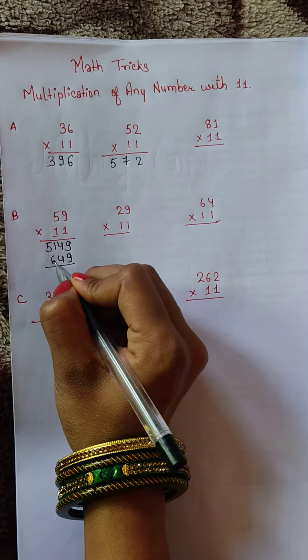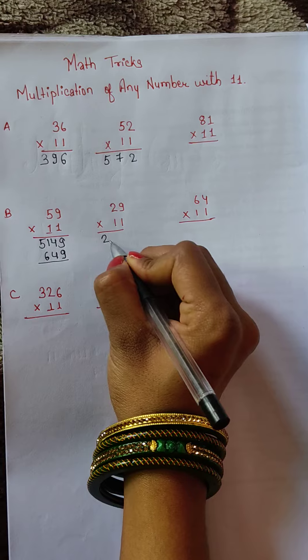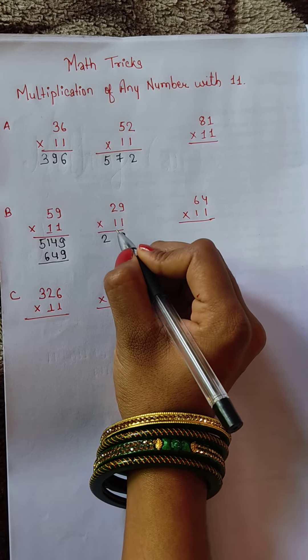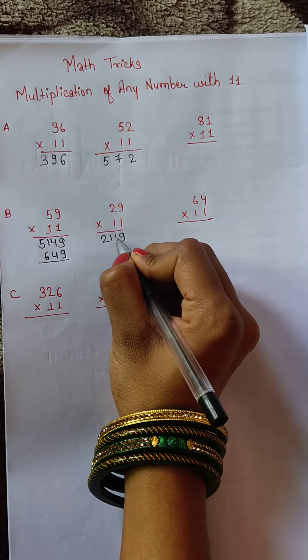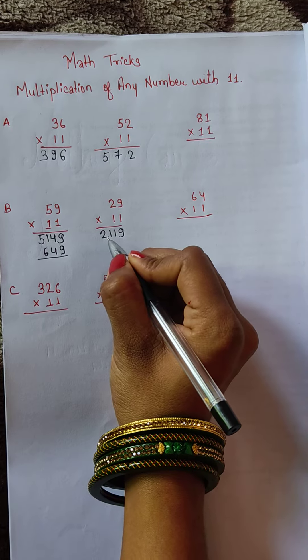Again, 2 and 9: 9 plus 2 equals 11. In the next step we will add 2 plus 1 equals 3, write 1 and 9.